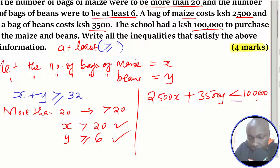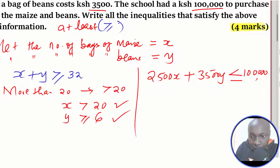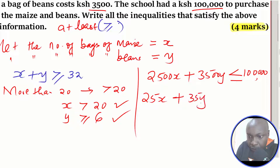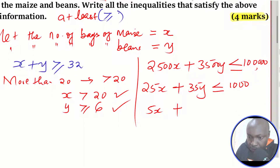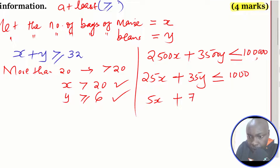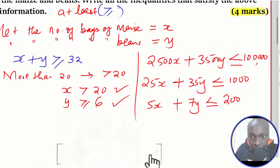We cannot leave this inequality as is, so we need to simplify it. Dividing every term by 100 gives 25x plus 35y less than or equal to 1,000. Then dividing everything by 5 gives 5x plus 7y less than or equal to 200. So those are all the inequalities you are required to form.